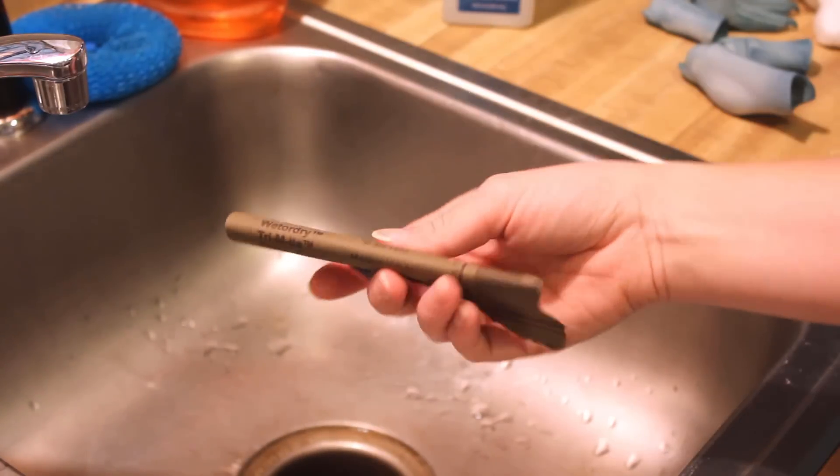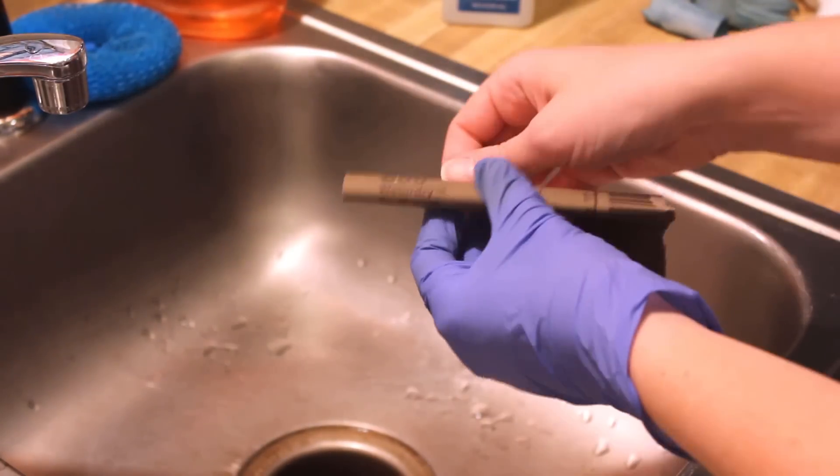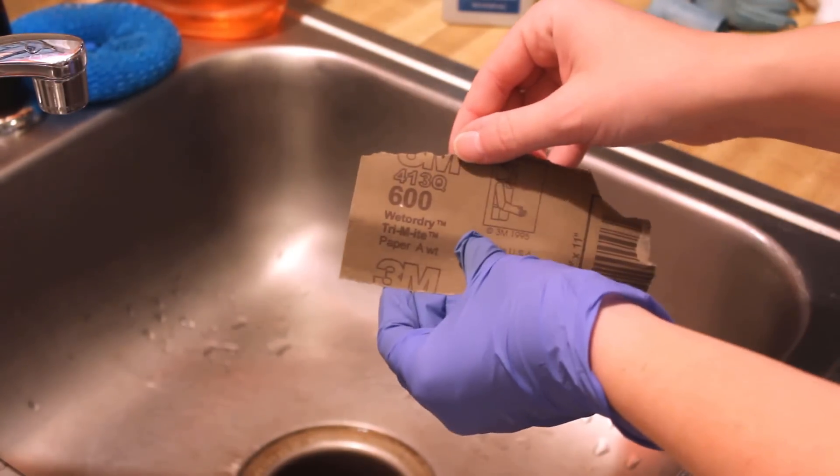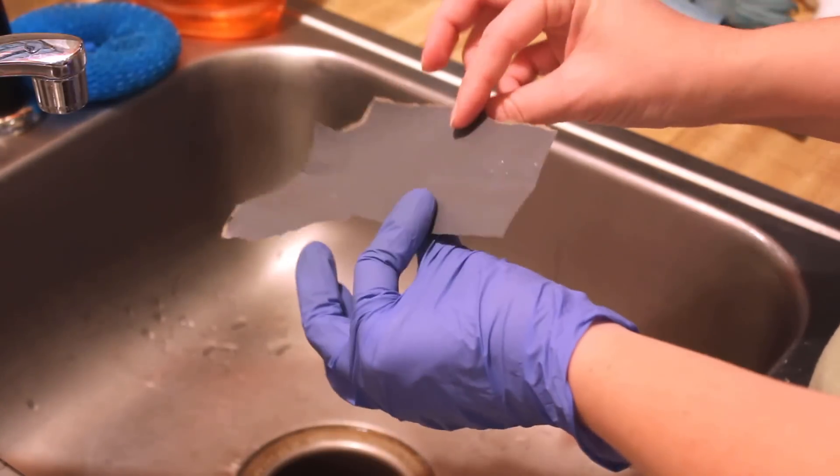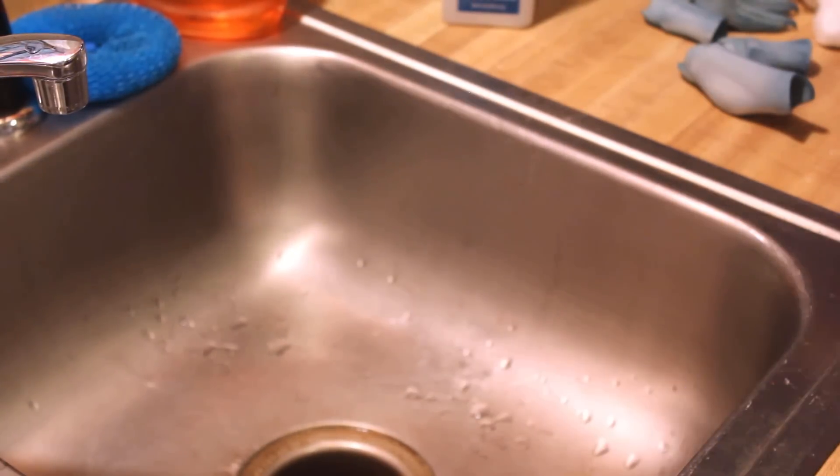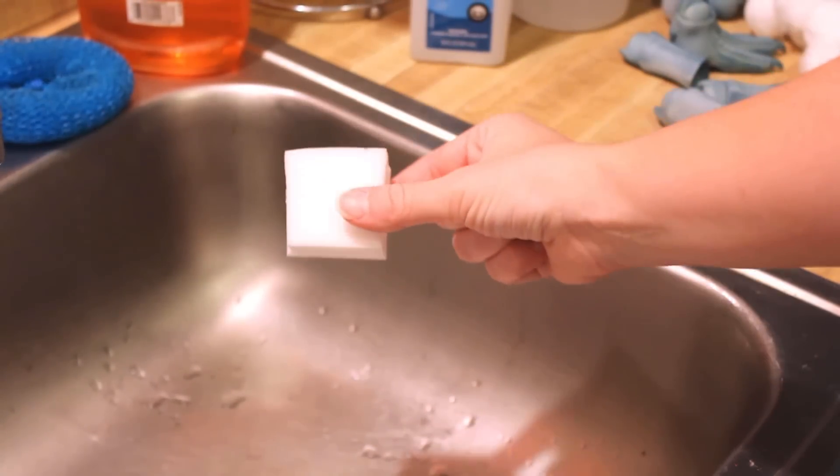I've also got some abrasives. I have sandpaper in a few different grits, but I'll mostly be using 320 and 600 grit. And then a magic eraser cleaning sponge, which is also mildly abrasive.